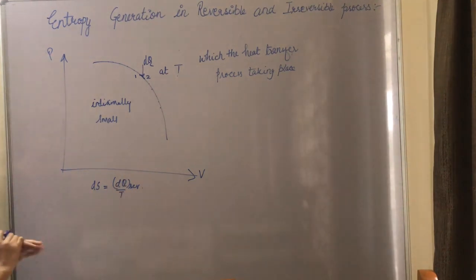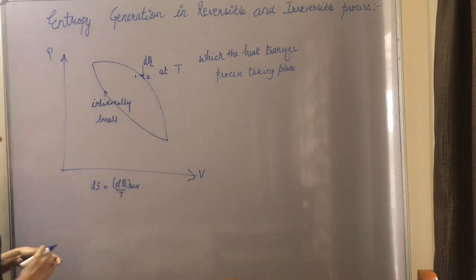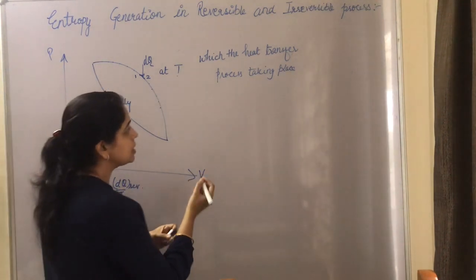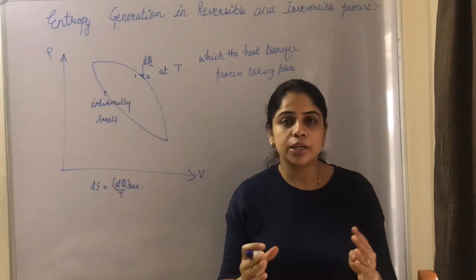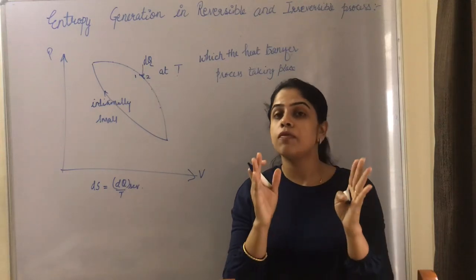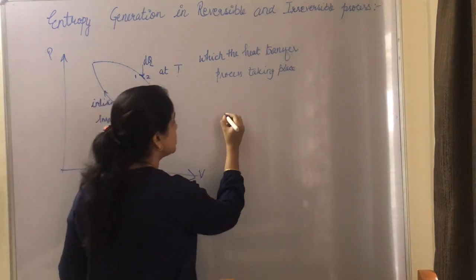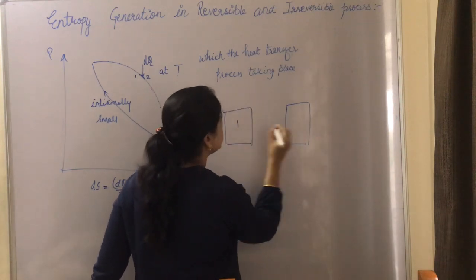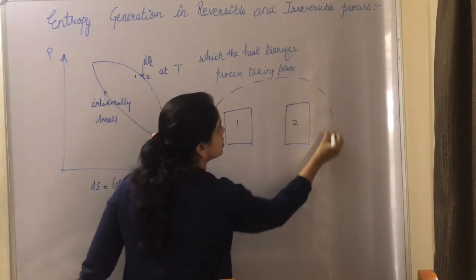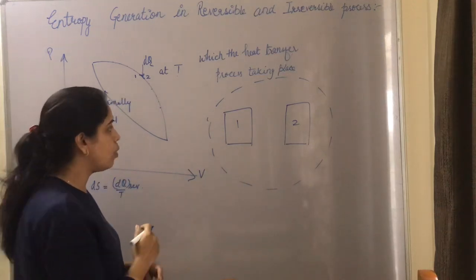Now let's look at entropy generation in an irreversible process. For any irreversible process, heat transfer takes place between two finite temperatures. To understand this, let's take body 1 and body 2 as our system, with no heat interaction between the system and the surroundings.